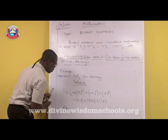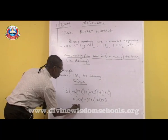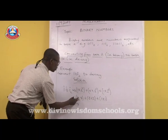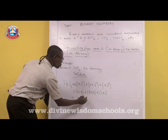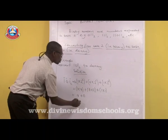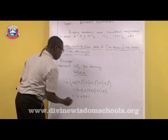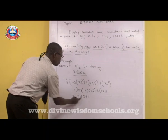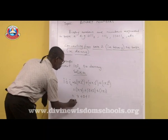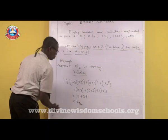So what you have altogether is 4 plus 0 plus 1, which gives you 5, and that should be in base 10. This is how you convert from binary to base 10.